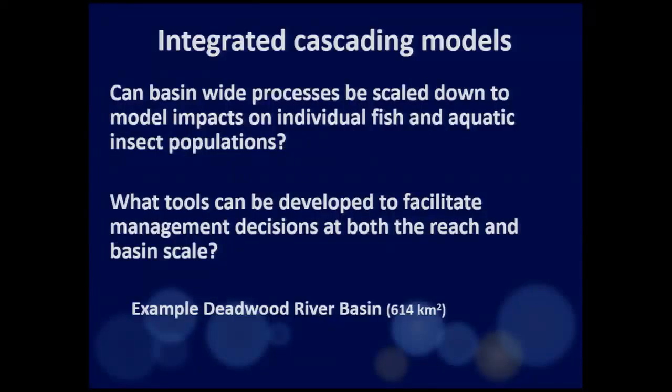What we decided to do was to use a novel type of technology and a cascade of models to answer, first, the biological opinions. But we were also charged with two key questions: Can we use basin-wide processes and scale them down to characterize what a fish or insect population is doing? Insects are very important as the basic food for the trophic chain. And what tools can we develop to facilitate management decisions at both the reach scale and the basin scale?